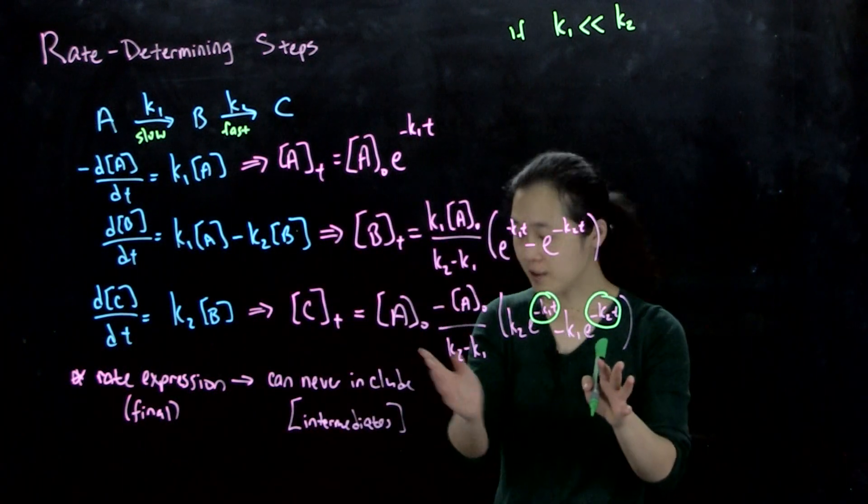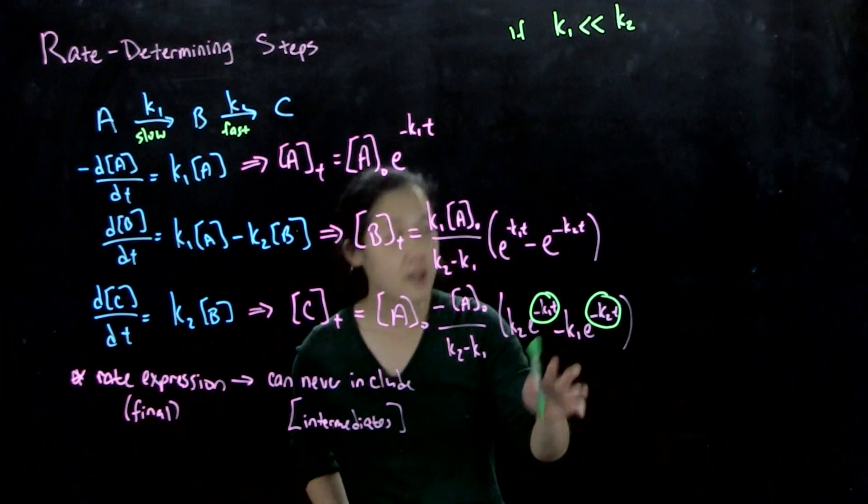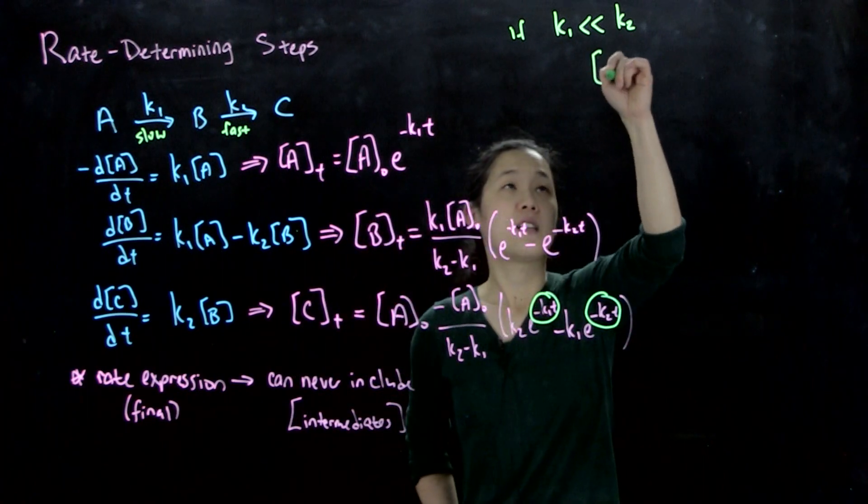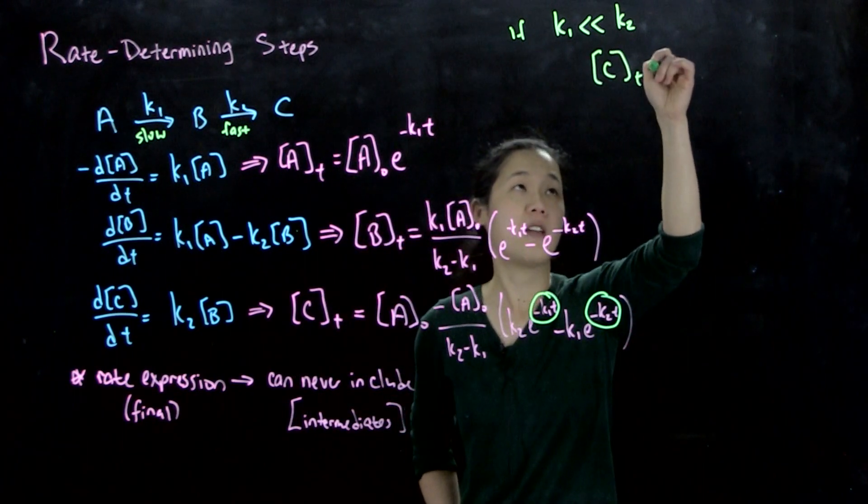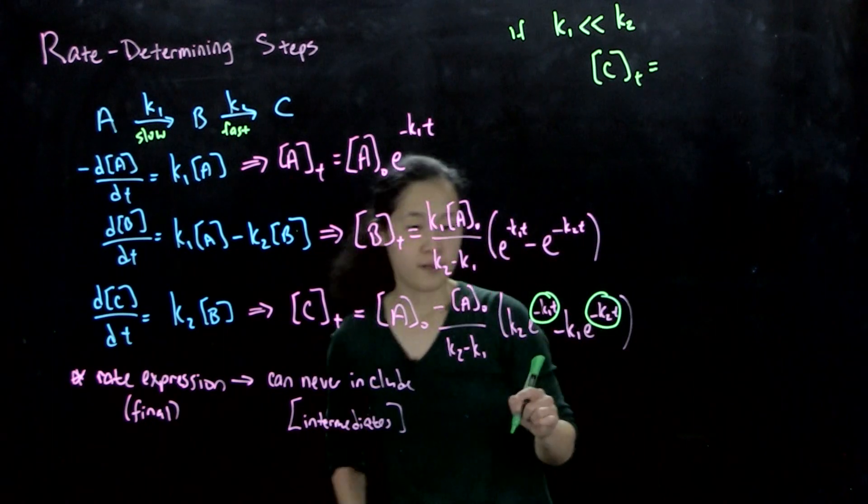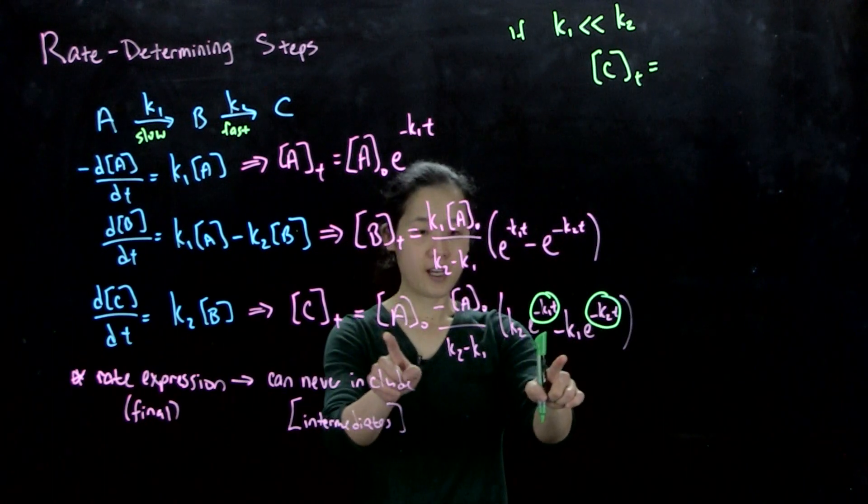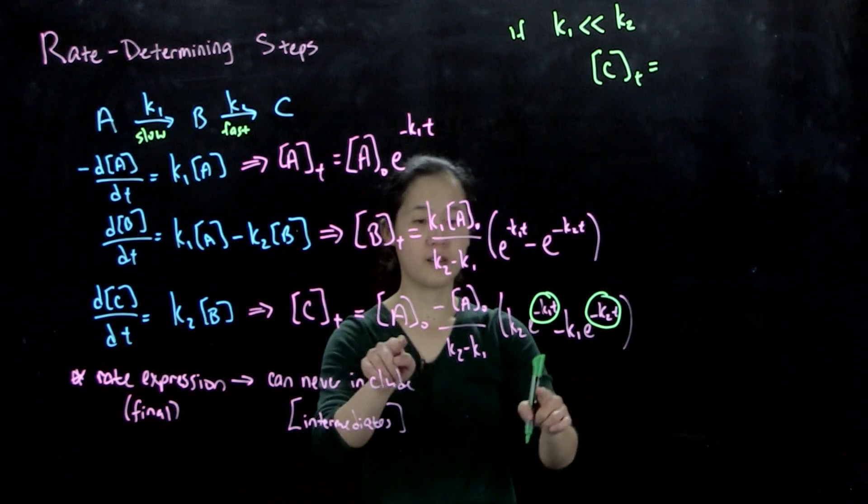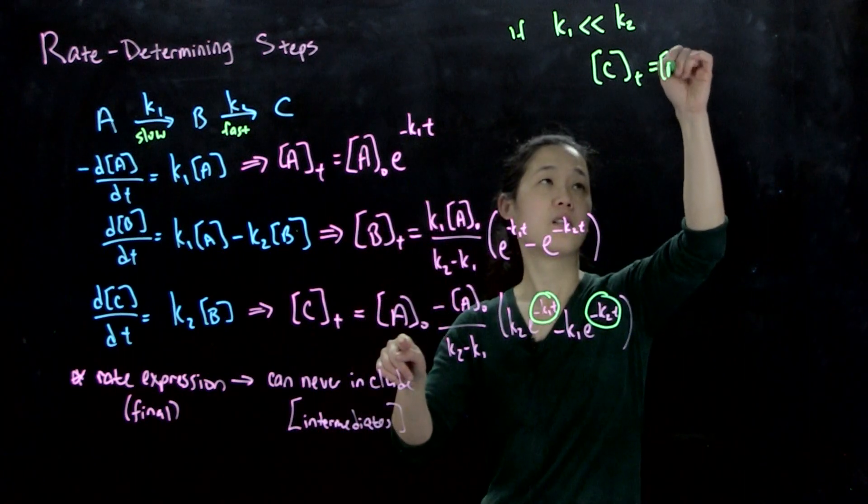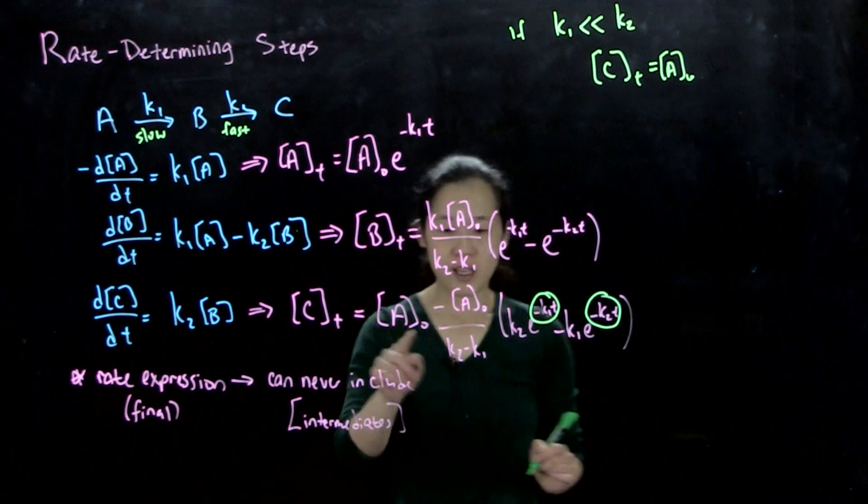So then we can look at our final concentration of C. What we'll get out is that C over time is going to be equal to, right, so we still have A0. So this is going to be the same.